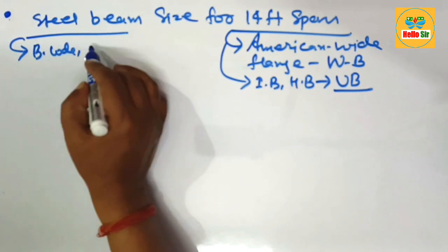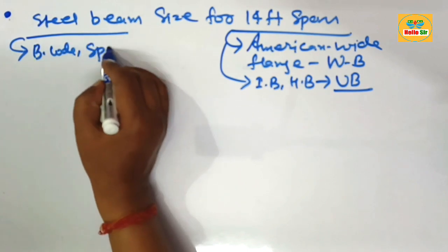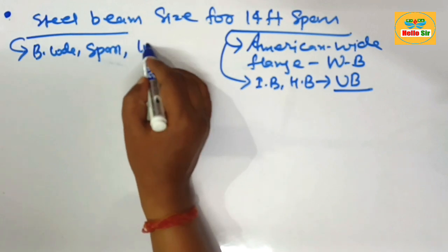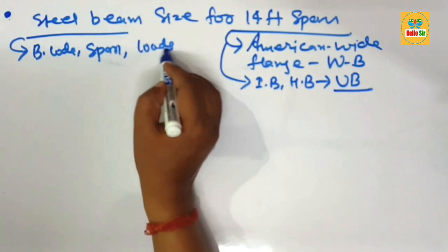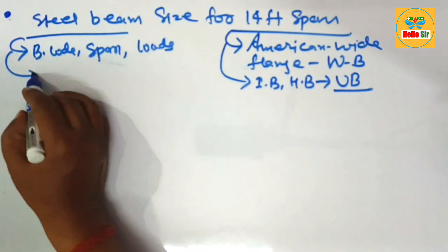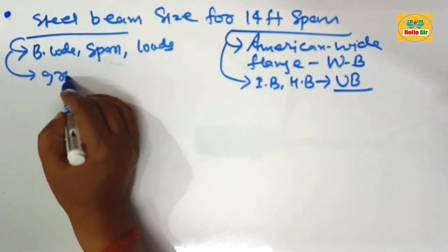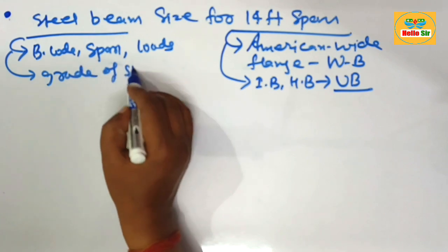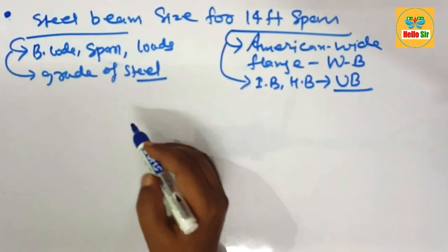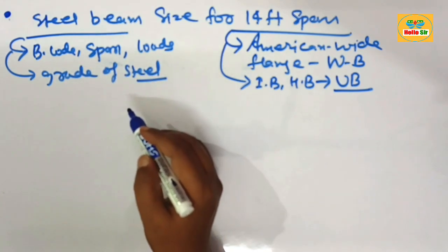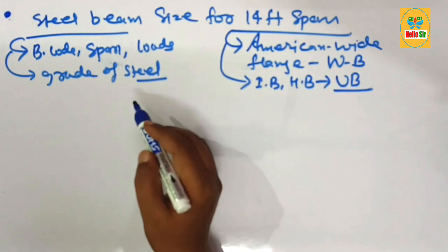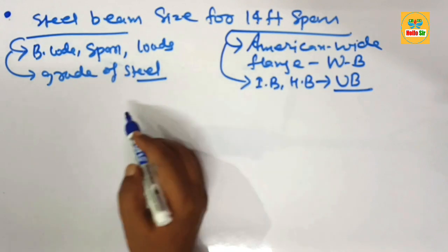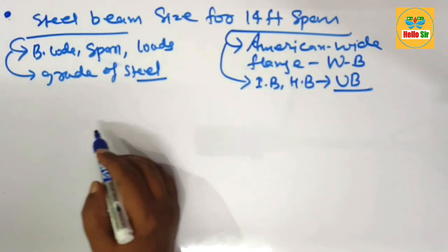The accurate size of a steel beam depends on many factors: the building code in your area, the span between the supports, the load condition, and the grade of steel. These are the major factors for sizing the steel beam required for a specific span.